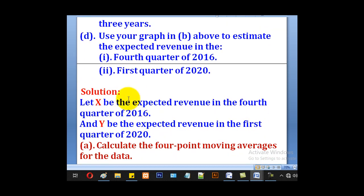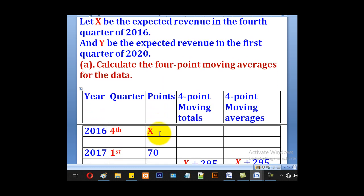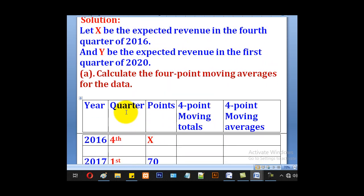The first thing to do is to let these values. Let X denote the expected revenue in the 4th quarter of 2016 and Y denote the expected revenue of the 1st quarter of 2020. So we shall start our solution.